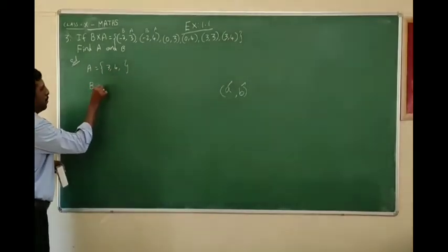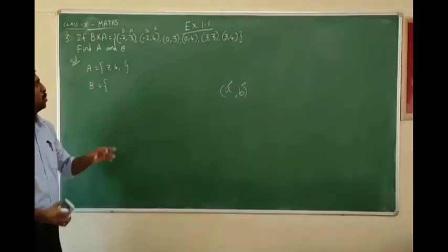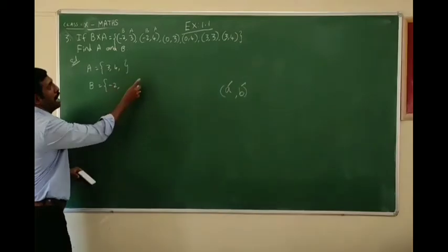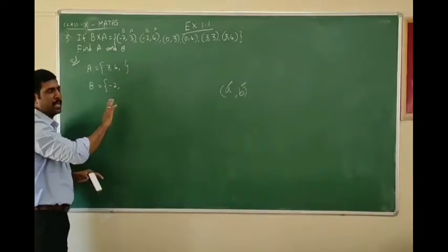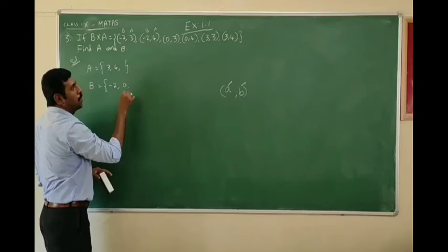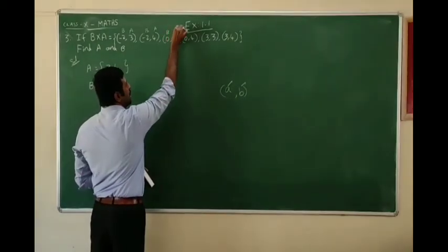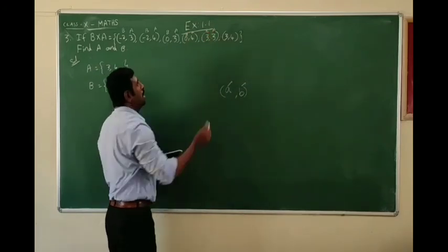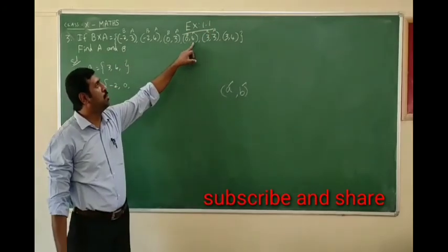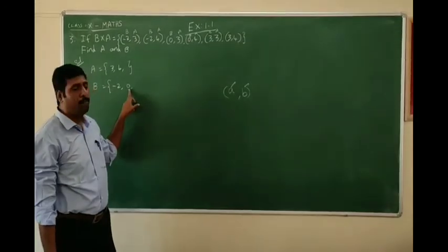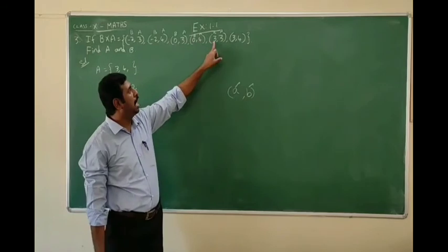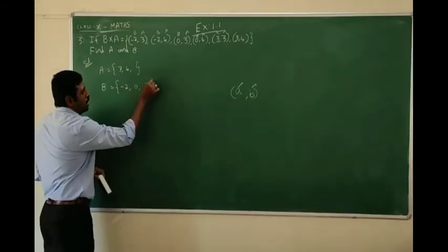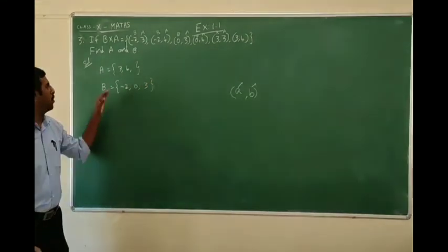Now we have to find set B. Set B consists of the first elements of each ordered pair, which belong to B. The first element is -2; -2 is repeated so we don't include it again. Next we have 0, and then 3. So set B is equal to {-2, 0, 3}. This is the set of A and B.